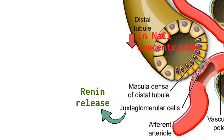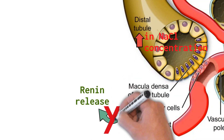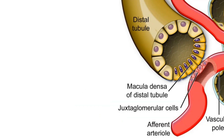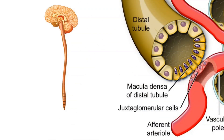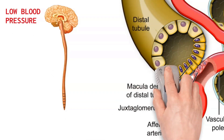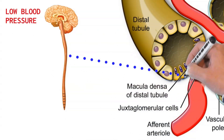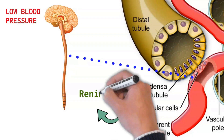In contrast, when sodium chloride is elevated in the tubular fluid, renin release is inhibited. Renin also releases in response to sympathetic nerve stimulation. When blood pressure is low, the nervous system activates the sympathetic nervous system and sends a signal that acts on the beta-1 adrenoceptor located in the juxtaglomerular cells to release renin.